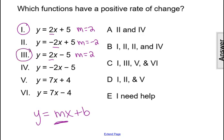The fourth function has negative 2 as the coefficient of x, so the slope is negative 2. And since it's a negative slope, that's a negative rate of change.